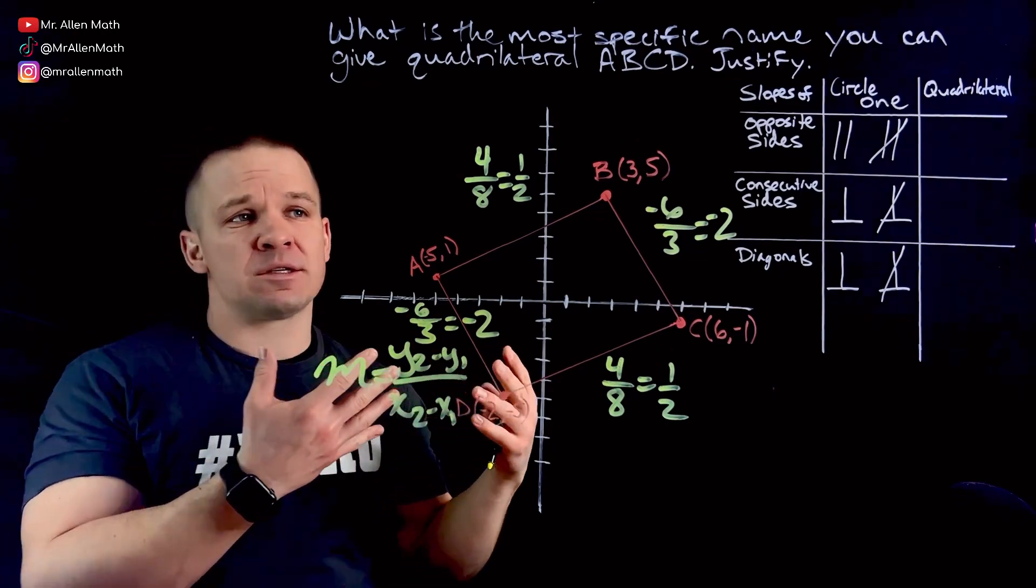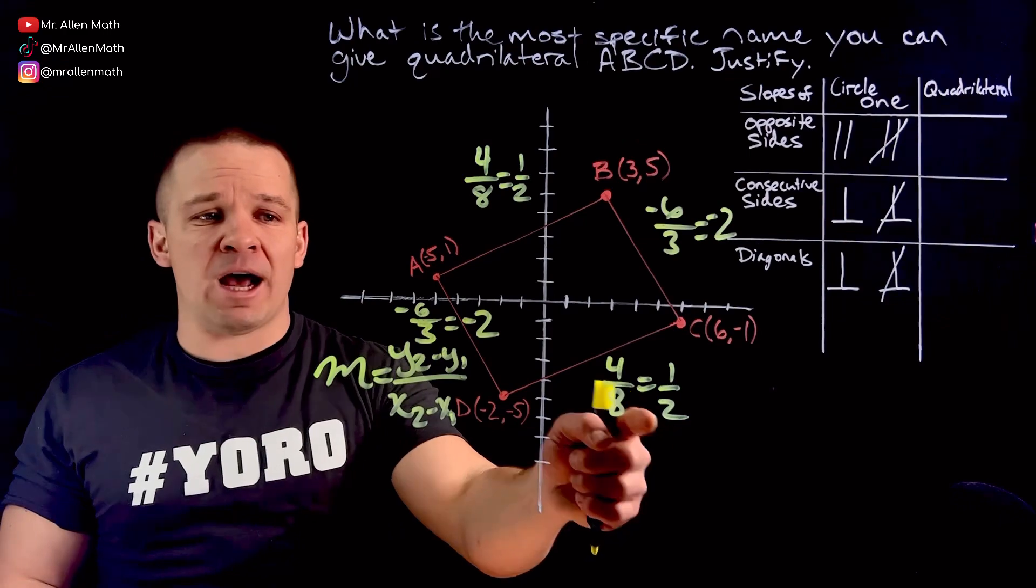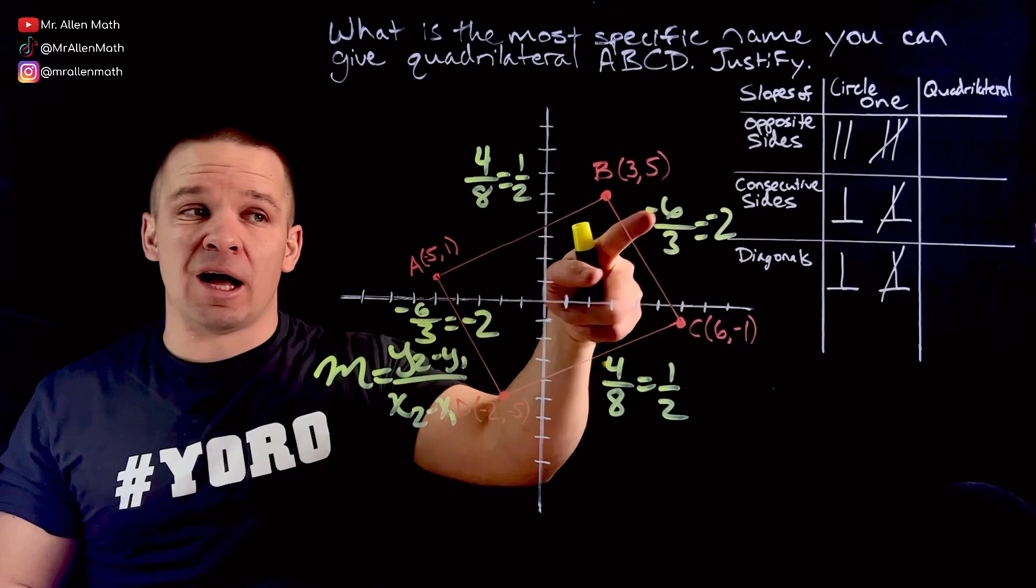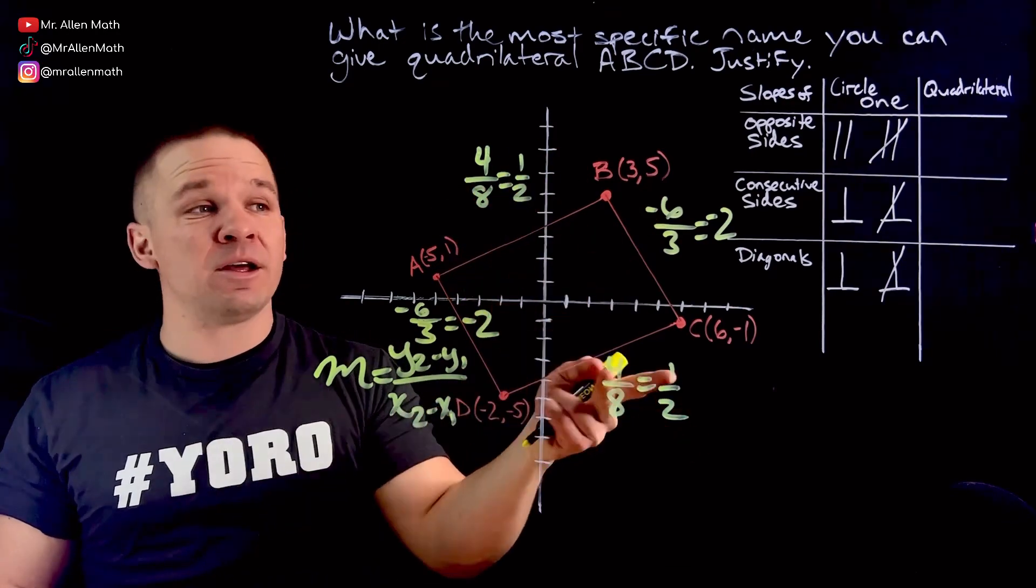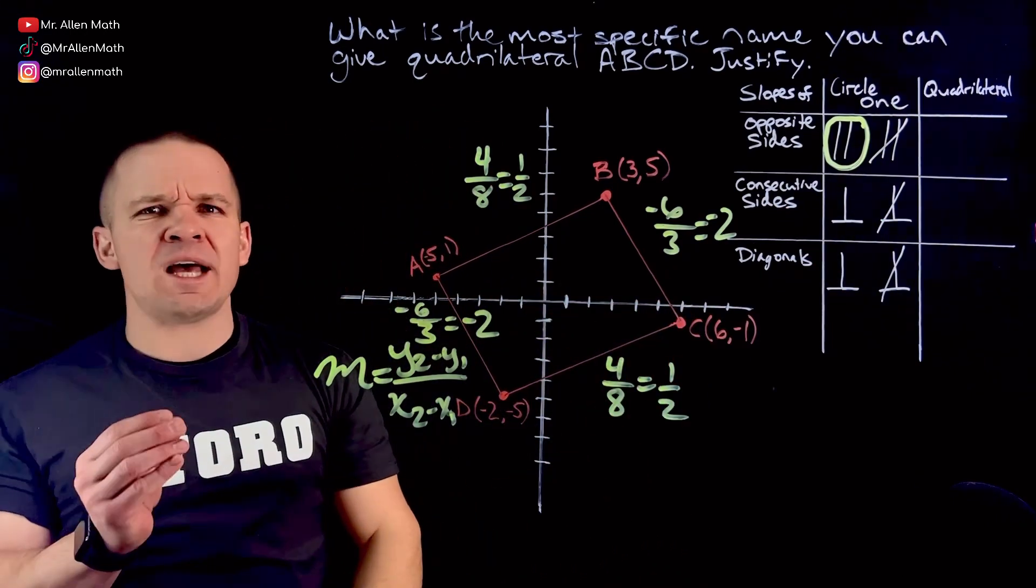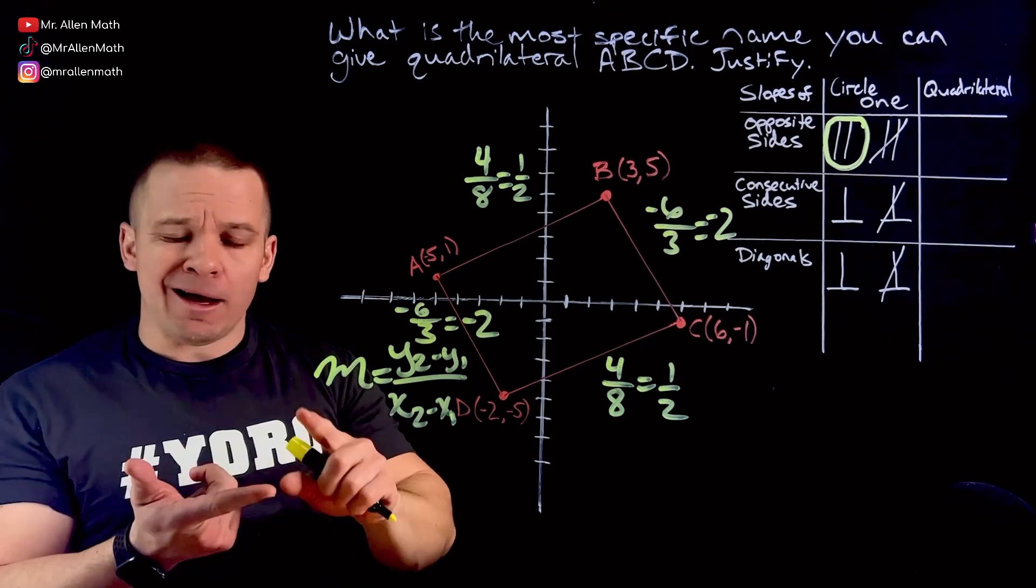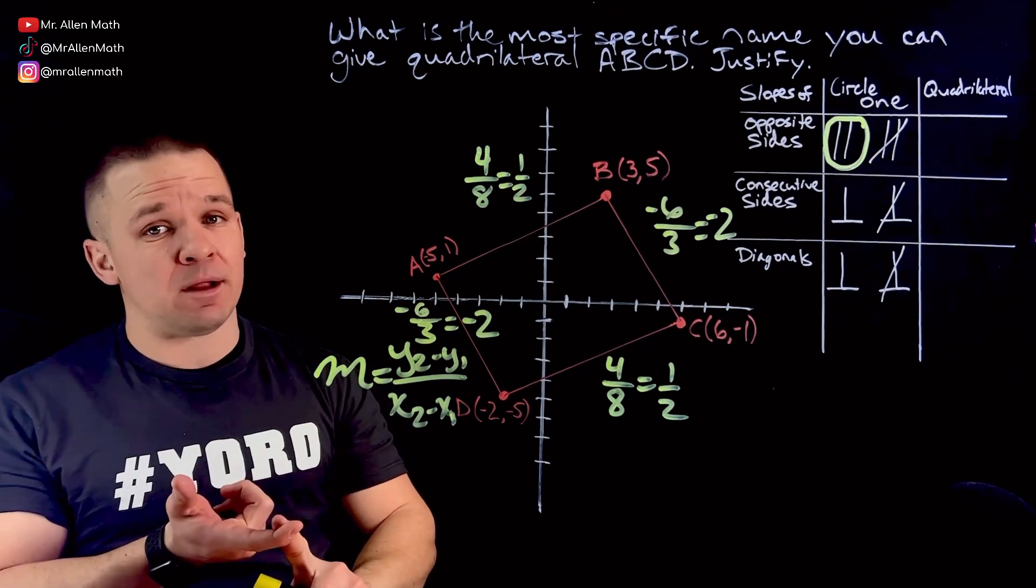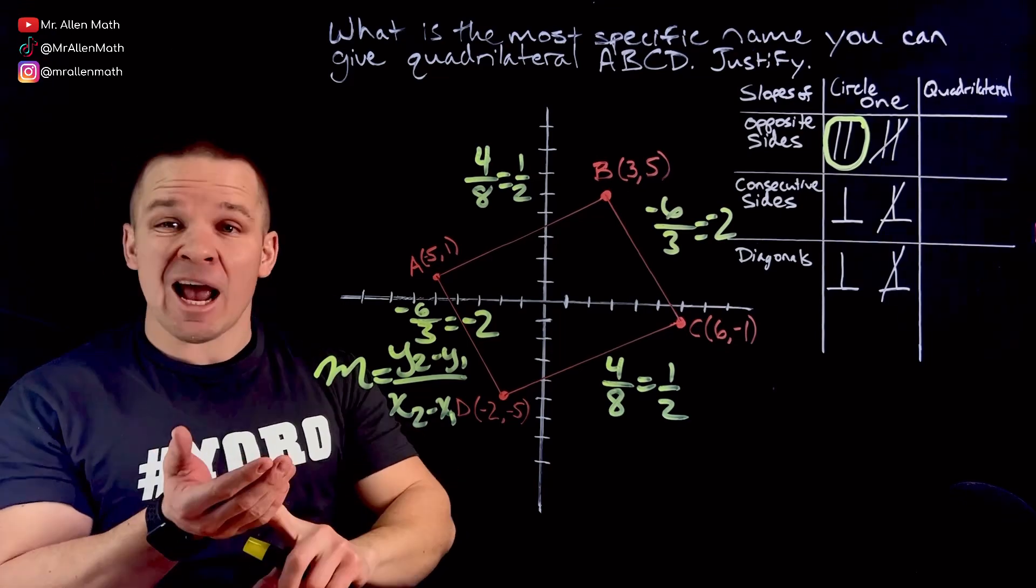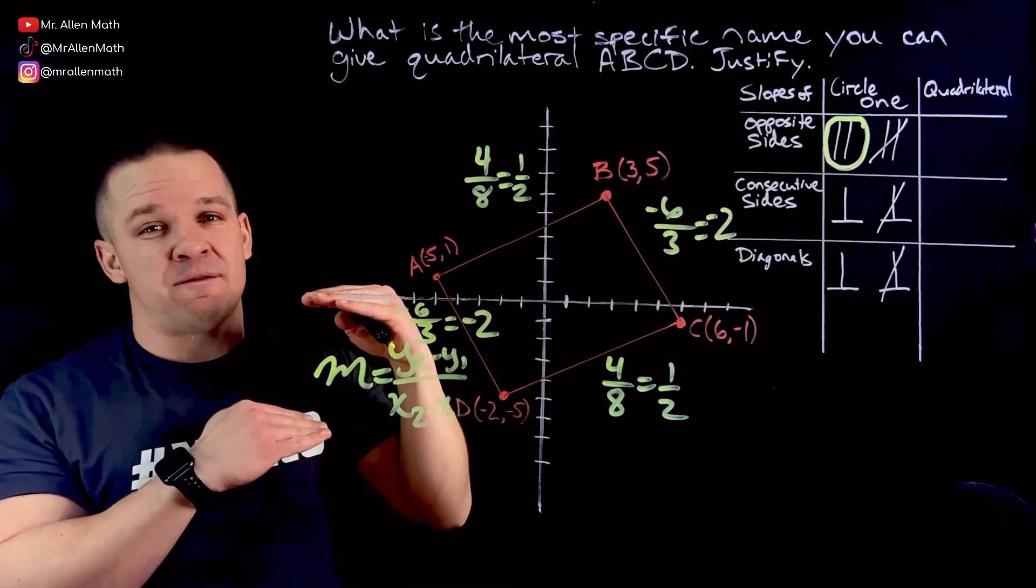So how do we interpret these slopes? Well, I've got these two are the same, 1 half and 1 half. These two are the same, negative 2 and negative 2. So my opposite sides are parallel here, and my opposite sides are parallel here. So my opposite sides are parallel. What does that narrow it down to? I have to be familiar with my quadrilateral properties. My parallelogram has opposite sides parallel. My rectangle has opposite sides parallel. The rhombus has opposite sides parallel. And the square has opposite sides parallel. My trapezoid only has one pair of opposite sides parallel.